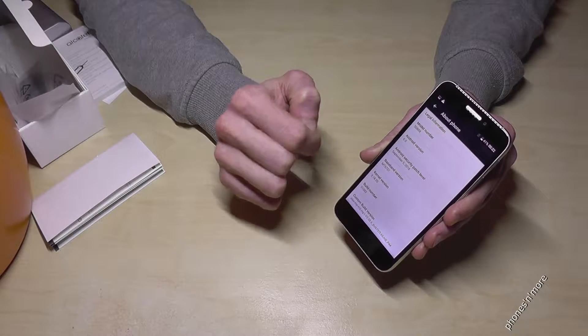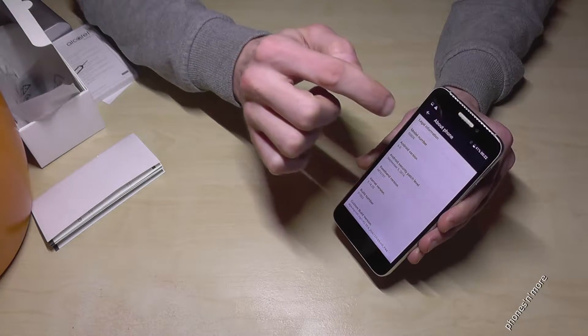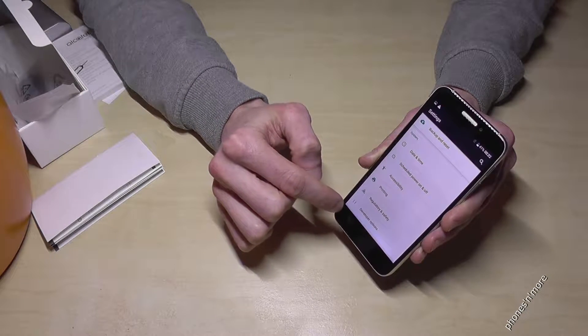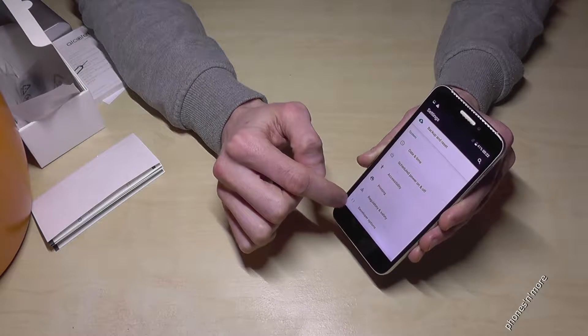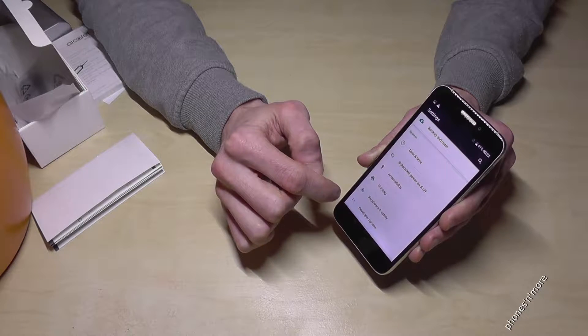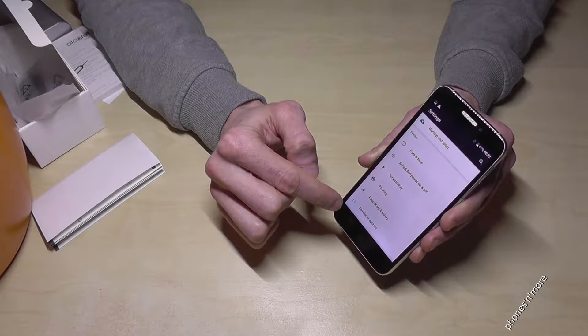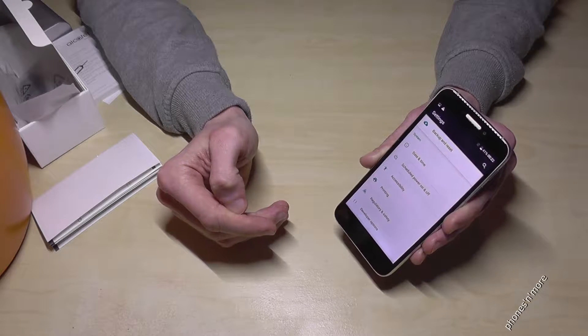If we go back to the settings, we now have the developer options here. Before they were invisible, so we just activated them with the build number.